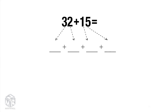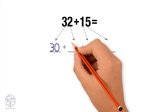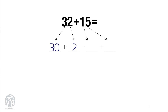We break apart 32 into tens and ones. The digit 3 is in the tens place, which tells you that there are three tens, or 30. The digit 2 is in the ones place, telling you that there are two ones. We break apart 15 into tens and ones. There is one 10, or 10, and five ones.